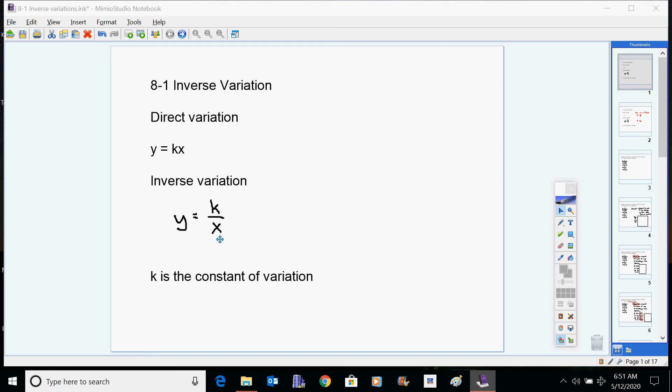These can both be written in a different way, which is useful for finding out how much your constant of variation would be. So if we divide both sides by x here, and if you multiply both sides by x here, we get a different form. This is a different way of looking at a direct variation. A direct variation is when you have a common ratio, and an inverse variation is where you have a common product.